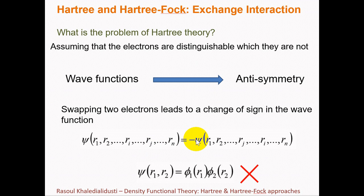For example, in the simple case of two electrons, if you swap electrons and change the variables, ψ₁(r₁)·ψ₂(r₂) is not the same as ψ₁(r₂)·ψ₂(r₁) — these two functions are different. So by changing the electrons in the orbitals, Hartree theory fails. To fix this problem, a simple modification can be made to the wave function — a product of single-particle orbitals that gives the right symmetry. This adds another term to the expectation value of the Hartree equation called the exchange interaction, which originates purely from the anti-symmetric nature of the wave functions.